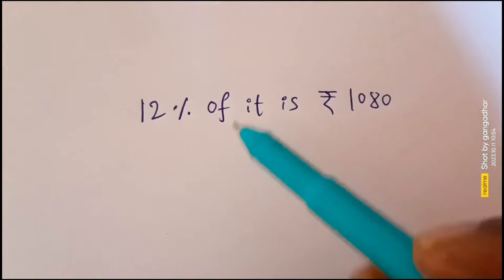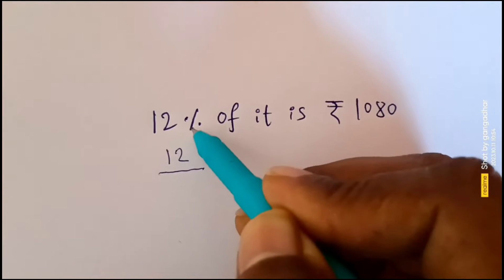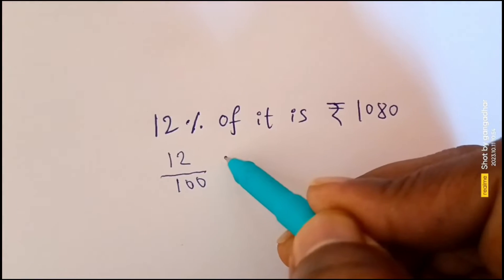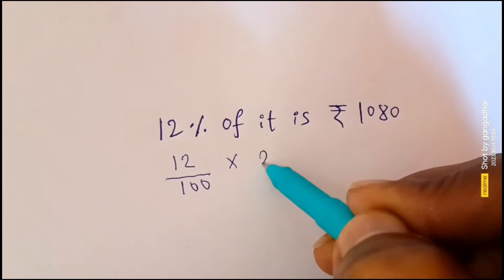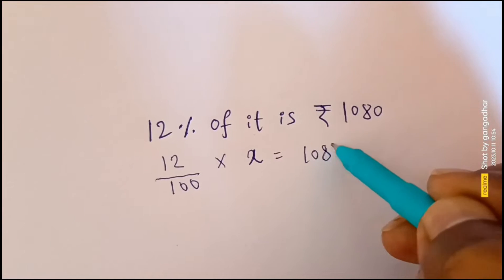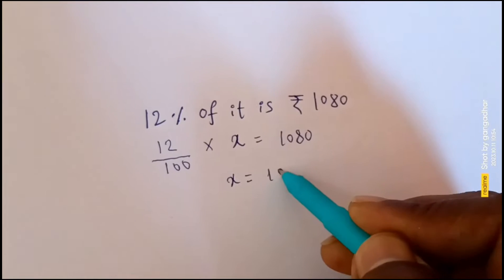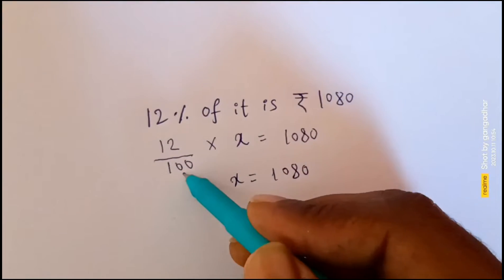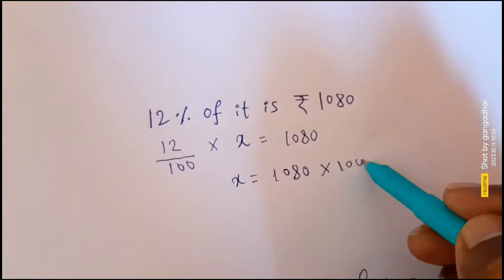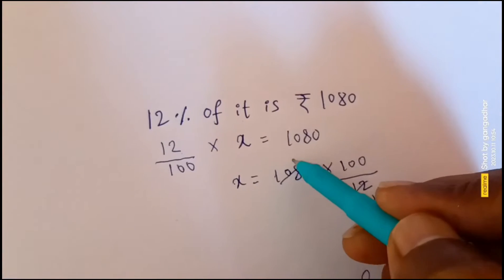12% of it is Rs.1080. 12% means we have to divide by 100, 'of' means multiply, 'it is' means x is equal to Rs.1080. You have to write x as it is: 1080, transfer 12 by 100 to the right hand side, it becomes reciprocal — 100 divided by 12. In the 12 table we know that 12 nines are 108.